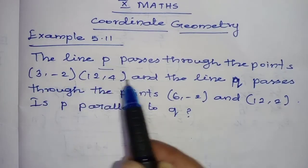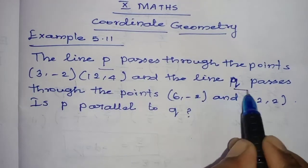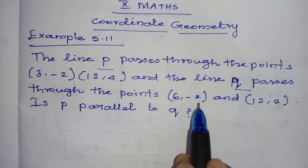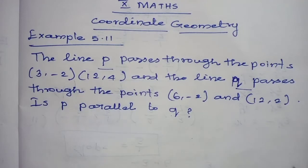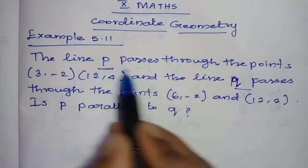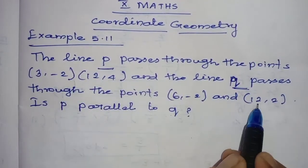minus 2), (12, 4) and the line Q passes through the points (6, minus 2) and (12, 2). Is P parallel to Q? So two lines P and Q are passing through the given points.